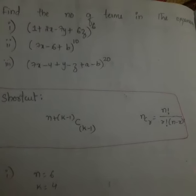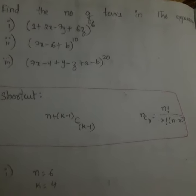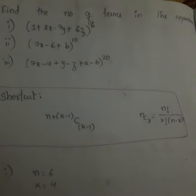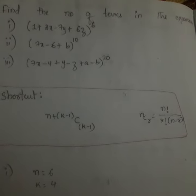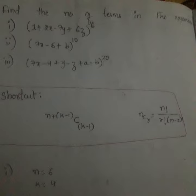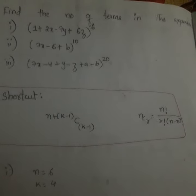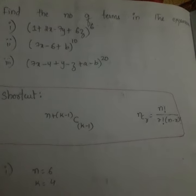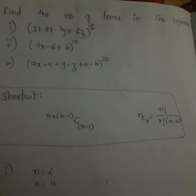Let's see the question first. Find the number of terms in the expansion (1 + 2x - 7y + 6z)^6. Second question is (7x - 6 + b)^10. Third question is (7x - 4 + y - z + a - b)^20.